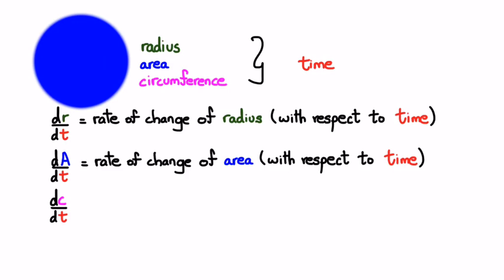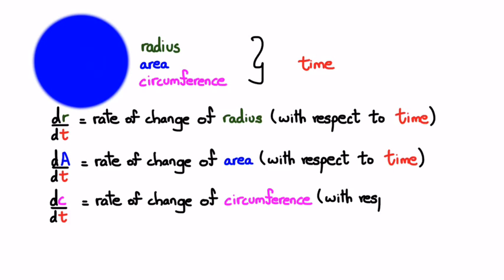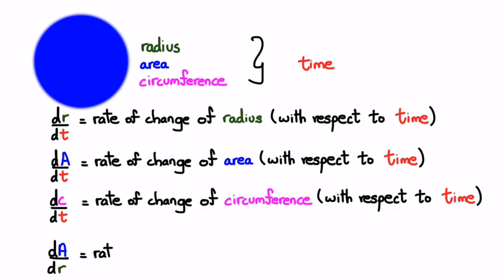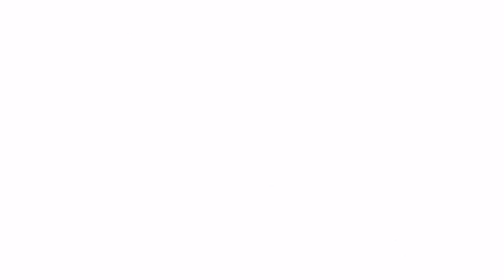You can also write dc/dt, which is the rate of change of circumference with respect to time. You can also put these things together — for example, da/dr is the rate of change of area with respect to radius. So how do we get da/dr? That's what I wanted to show in the next slide.